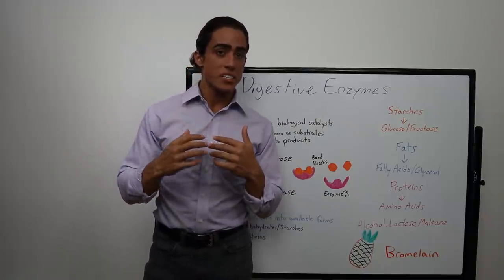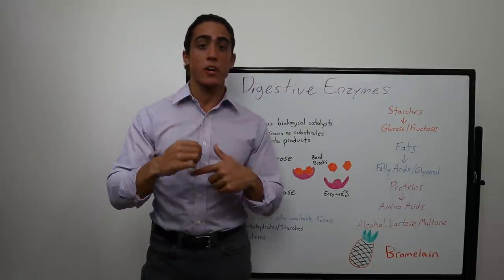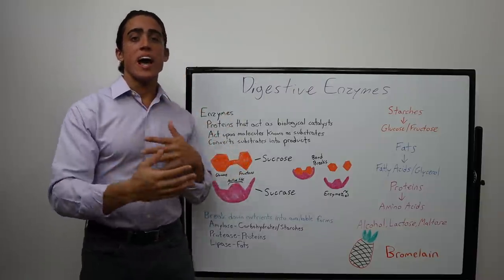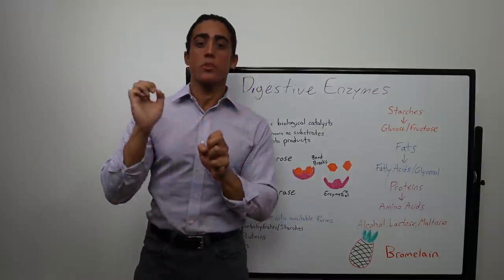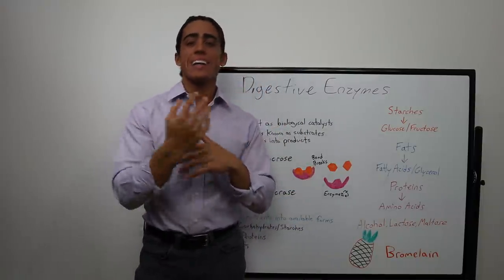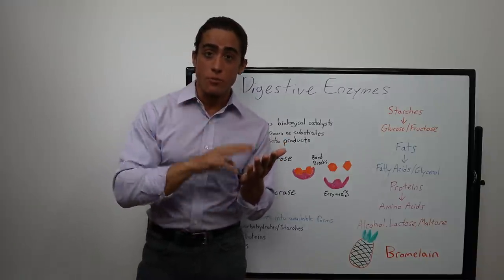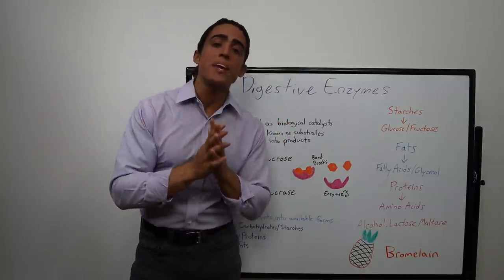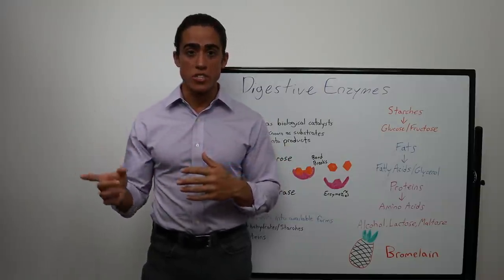Keep in mind, the digestive tract is technically outside of our body — it's kind of like a tunnel that goes through our body. Without these enzymes, we cannot break down the foods we eat. Our body cannot absorb nutrients from food properly without the presence of enzymes. In the majority of natural foods, the carbohydrates, proteins, and fats, as they naturally occur in those foods, are not immediately available to be absorbed into the small intestine as direct nutrition.